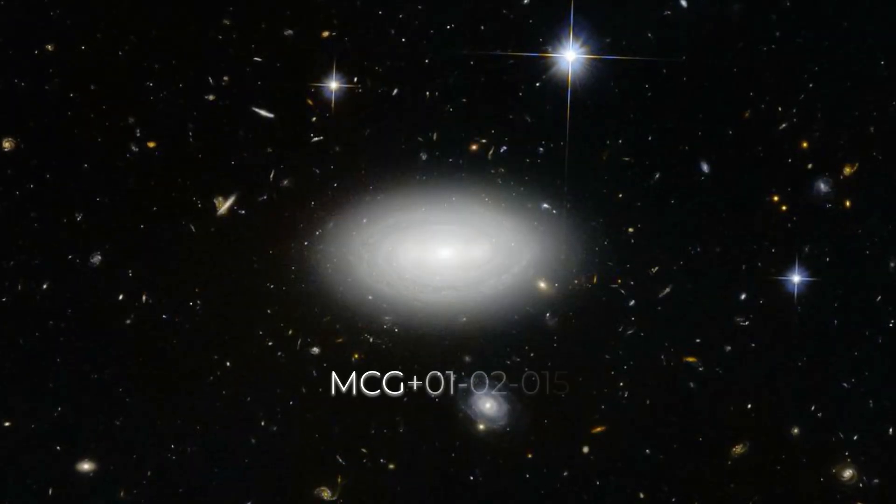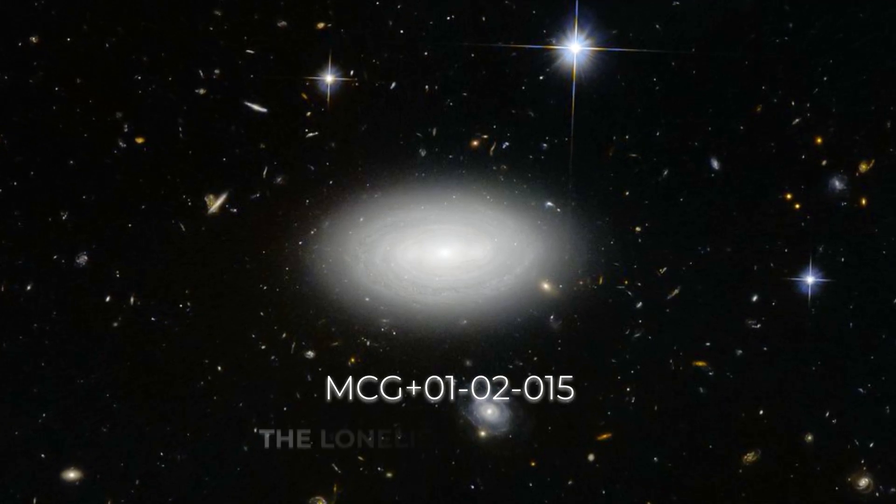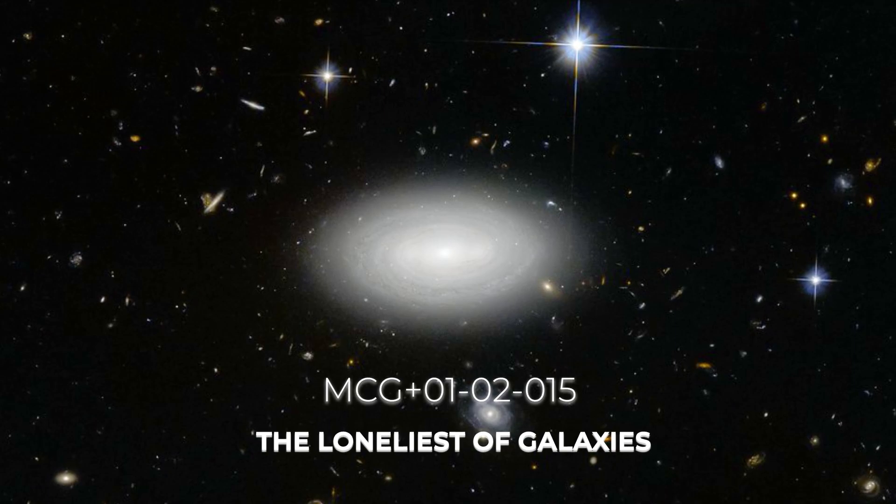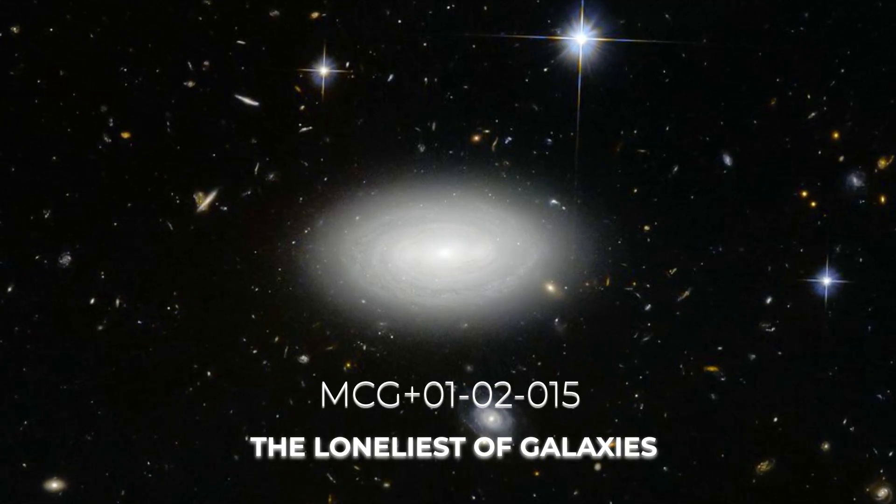Spiral galaxy is located in the Boötes void. It is referred to as the loneliest of galaxies by the European Space Agency. It is unknown how the galaxy got there.